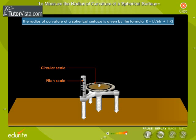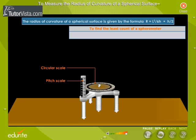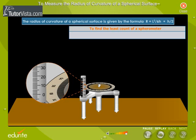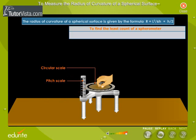Let us see how the height of the given surface is determined. First find the least count of the spherometer. Bring the zero of circular scale opposite to the pitch scale as shown here and rotate the screw 5 times.